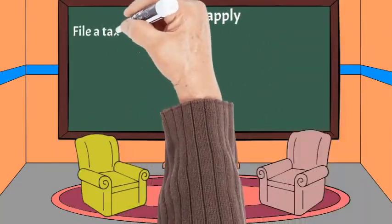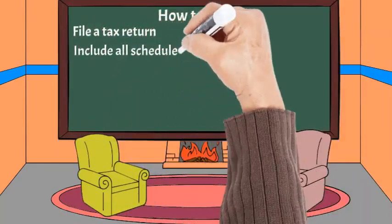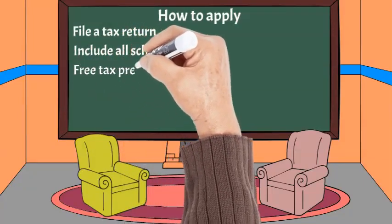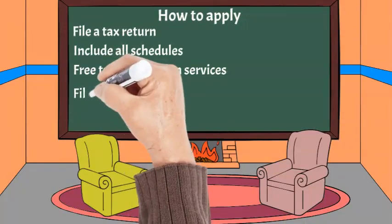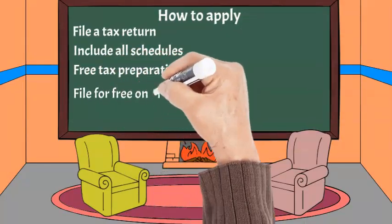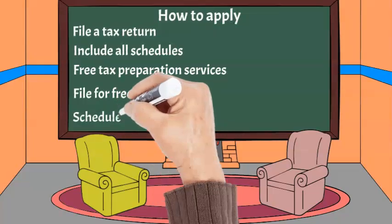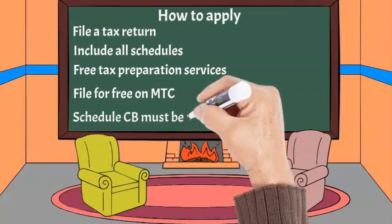To apply for the circuit breaker credit, you'll file a tax return on your own or through a tax preparer. Free tax preparation services are available through VITA or AARP. You can also use MassTax Connect through the Department of Revenue to file for free. To request the credit, you must complete Schedule CB and submit with your tax return.